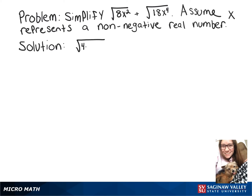So we can turn that first part into 4 times 2 times x squared, and the second part into 9 times 2 times x to the fourth.